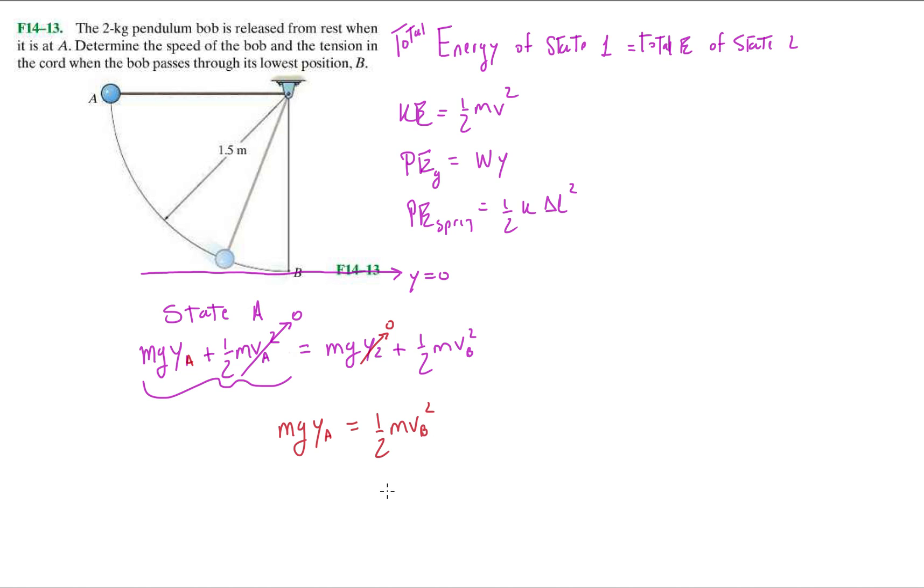So all I'm left with is the potential at position A equals the kinetic energy at position B. Once you get the hang of this, these problems are going to be a piece of cake. So it's going to be two times nine point eight one. What's the position or the y position of A or the height?